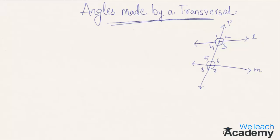Angles 3, 4, 5, and 6 are interior angles, whereas angles 1, 2, 7, and 8 are exterior angles, since they lie outside lines L and M.